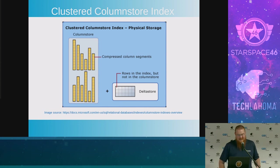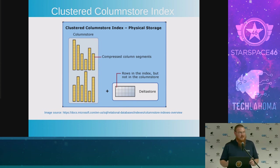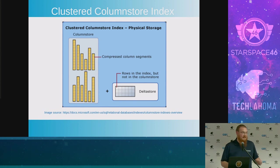That generally holds fairly true with most columns. So you've put it on its side and you've compressed the data. What that is great for is if you need to do an average or a sum on a single column, it is really fast. Because you hop to that one page, and all the data you need for that column is right there.